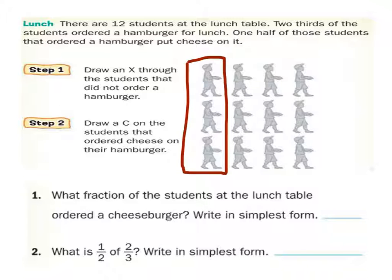So how many of these three people got hamburgers? Two-thirds. How many of the three? Two of them did, right? So let's say this guy got a hamburger, hamburger, no hamburger.